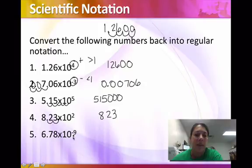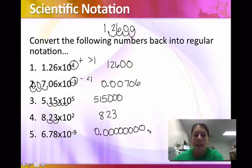And on this last one it's a negative 9. And this first jump will take it right in front of the 6 and then I need 8 more jumps which means I'm going to need 8 more zeros. So it's going to be 1, 2, 3, 4, 5, 6, 7, 8, 6, 7, 8. And that's your number for number 5.